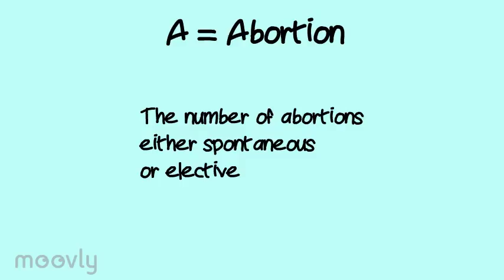Abortion is the number of spontaneous or elective abortions. This includes any birth before 20 weeks gestation. Any multiple births, like twins or triplets, count as one. Using the same example, her gravidity is four, term is one, preterm is one, and abortion is one.